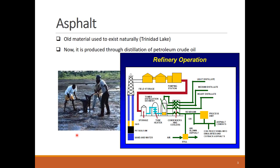Asphalt is a very fundamental building material that can exist naturally or artificially. The Trinidad Lake is the most famous natural asphalt source. Nowadays asphalt is produced as a byproduct of crude oil distillation and refinement. Around one to two percent of crude oil is refined into asphalt.